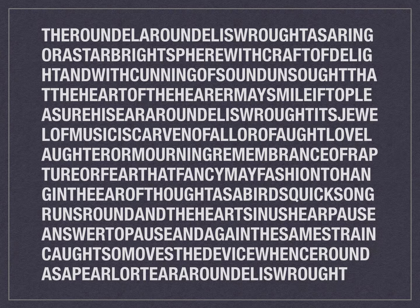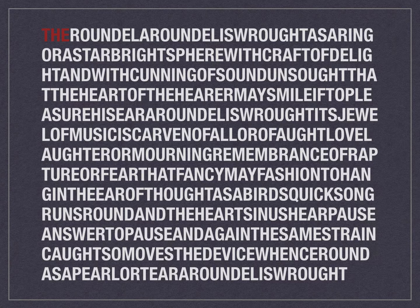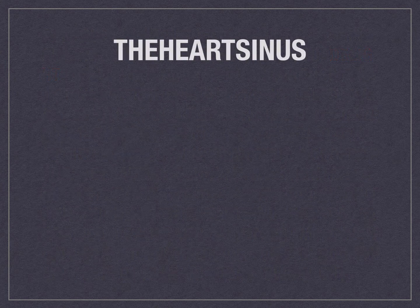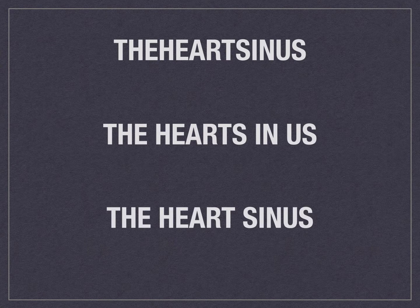Here is a text with virtually no markup. It looks strange to most of us because we're used to markup, but it wasn't so strange to the Greeks and Romans who wrote this way with all capital letters and no spaces between words. Words are there, but it's difficult for us to identify them without the markup of whitespace, and the lack of markup introduces ambiguity. Is this string of text 'the hearts in us' or 'the heart sinus'? Both are reasonably good band names, but we would still like to know what the author intended us to read.